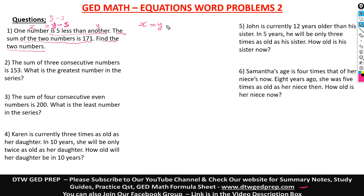So our first equation is: X equals Y minus five — equation one. That's what the statement means. Then the second statement says the sum of the two numbers is 171, so X plus Y equals 171 — equation two.